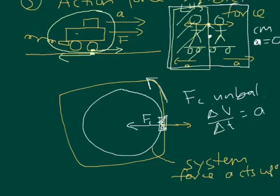So that unbalanced force is acting on the system, and the system itself is applying a force on everything else. And that's how the force pairs balance. There is no unbalanced force in the universe.